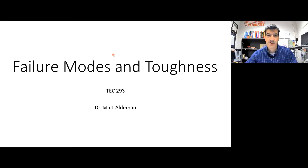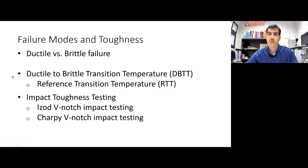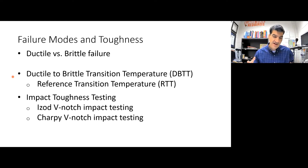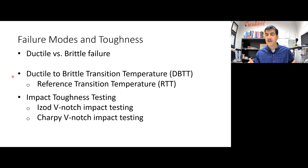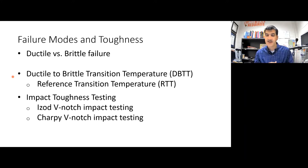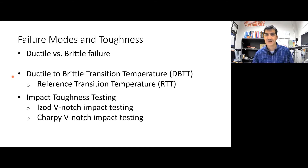Now let's start talking about failure modes and toughness — how things break and how much energy they absorb when they do break. We're going to talk about two different types of failure: ductile failure and brittle failure. Generally, think about tensile testing, but it also applies to bending testing, shear testing, and in some instances compression testing. We're talking generally about how things fail. After that, we're going to talk about the effect of temperature on the way things fail.